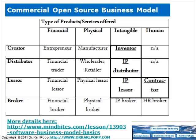Then of course software is distributed — that's the distributor model. Then software is licensed to somebody else — that's the IP lessor. IP stands for intellectual property. And then in addition there are services which are provided. So in the software industry we have maintenance, support, and consulting services, and these are classified as lessor of human services. And this is the contractor business model.